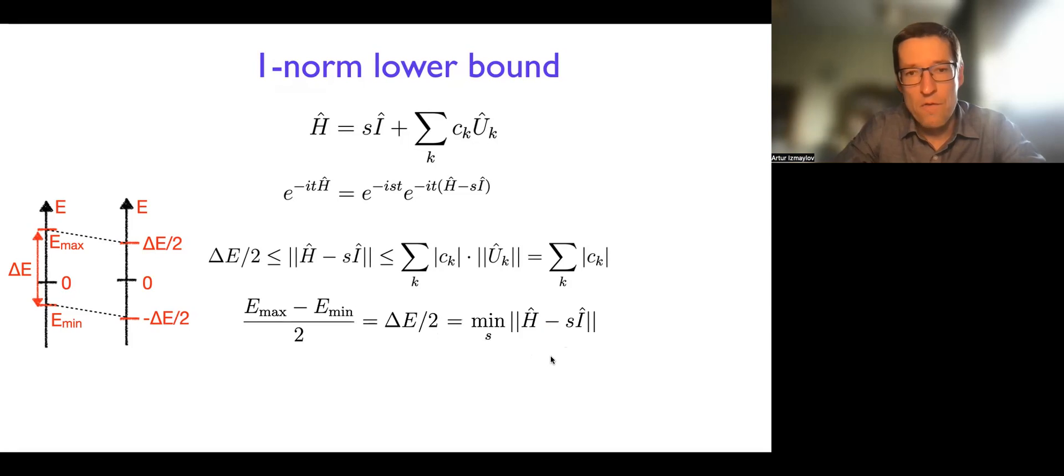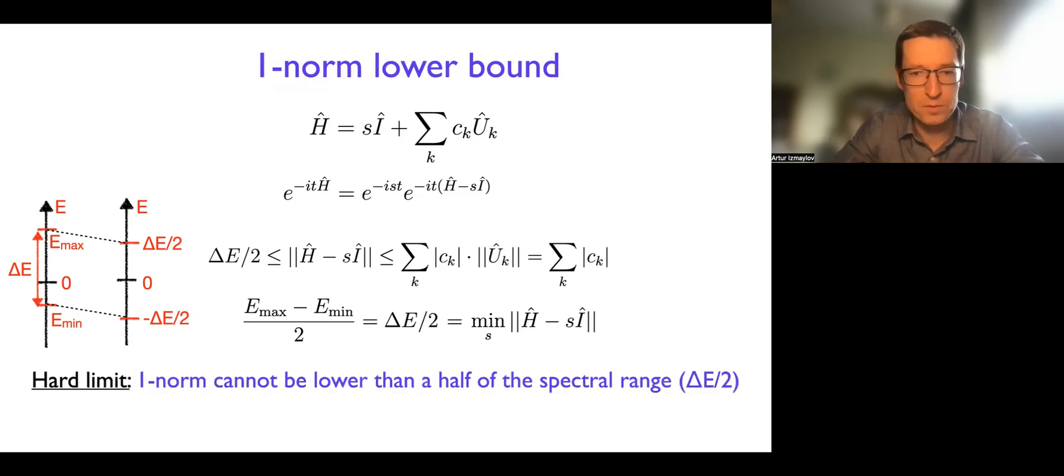And so that allows us to say that one-norm is always going to be bigger than this spectral range divided by two. Okay, so that's essentially the hard limit. You cannot, no matter what unitaries you choose, make the one-norm better than the delta E divided by two. Of course, one way around this is to change the Hamiltonian, because if you change the Hamiltonian, the spectrum will change and you can have a chance to change the delta E divided by two.